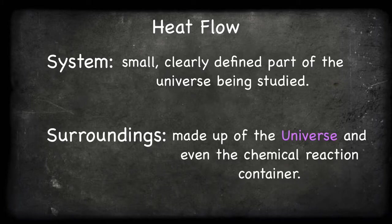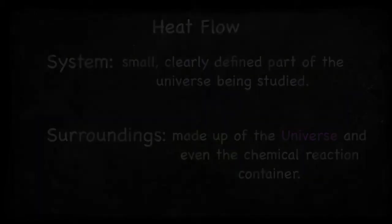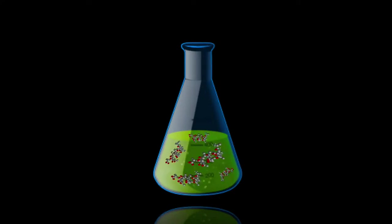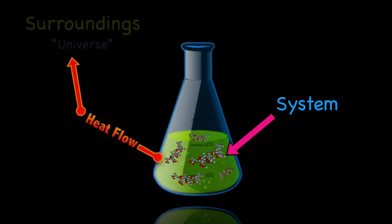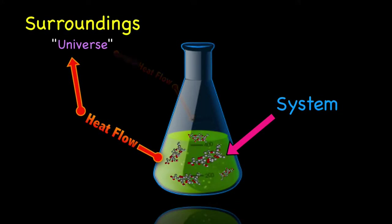The surroundings are made up of the universe and even the container in which the reaction is taking place. To clarify, the mixture of chemical substances that undergoes a reaction is always the system, and the flow of heat can be from the system to the surroundings or vice versa.